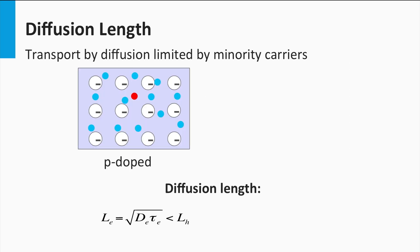Consider a p-doped semiconductor material. The holes (blue dots) are the majority charge carriers and the electrons (red dots) are the minority charge carriers. Holes have a small probability of meeting an electron, so the recombination rate for holes is small. On the other hand, electrons have a high probability of meeting a hole, since the hole density is many orders of magnitude higher. This means the recombination rate for electrons is high — in other words, the diffusion length of electrons, L_e, is shorter than that of the holes, L_h.